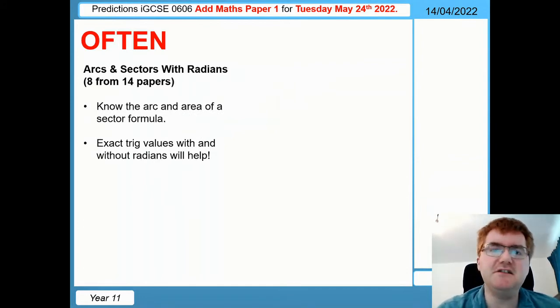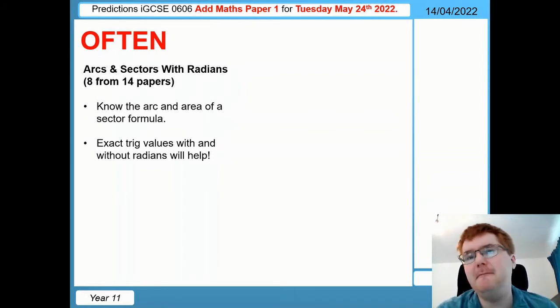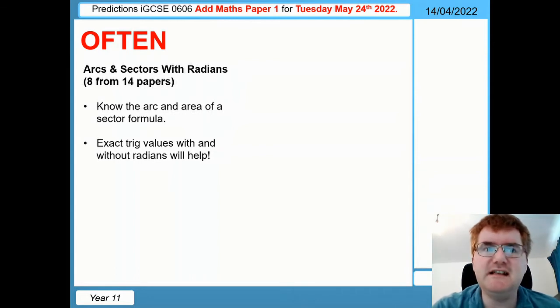My next topic is arcs and sectors with radians, so make sure you know the arc formula with radians and the area formula of a sector also with radians. Again, exact values also help you here, so if you know what sine pi over three is, that will help you and speed up the exam so you've got more time to spend on those really difficult questions towards the end.